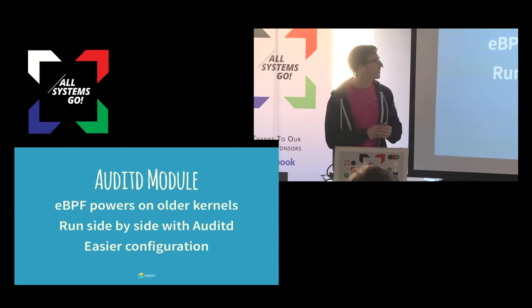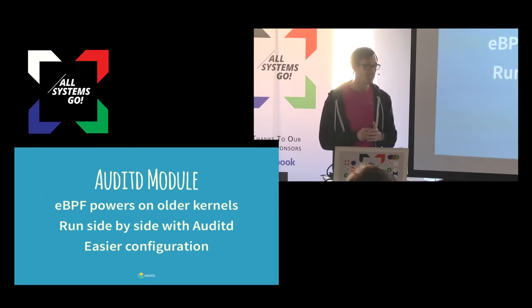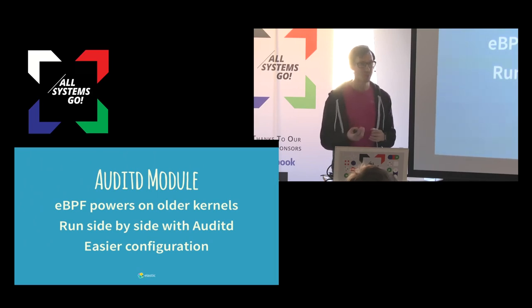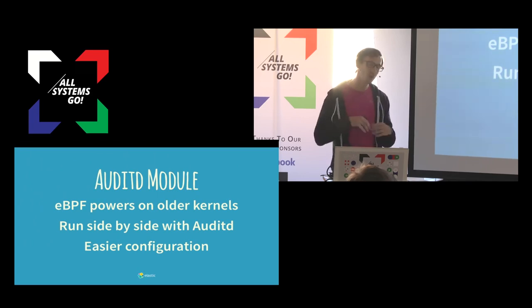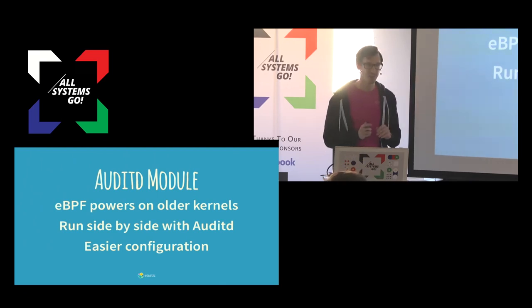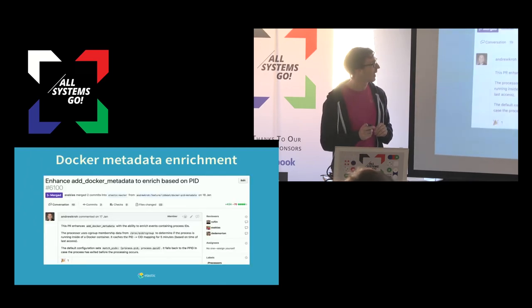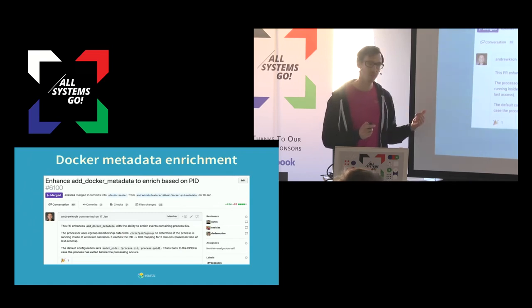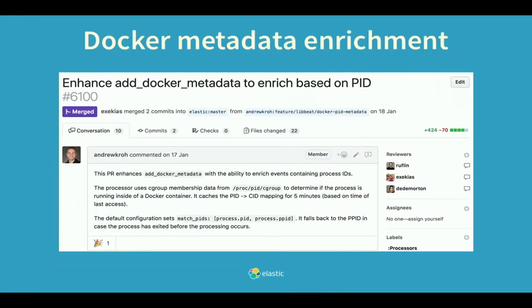The idea of AuditBeat was: we use the AuditD syntax, so you can reuse the syntax you had for AuditD, but we immediately correlate related events, resolve the user IDs, and push directly to Elasticsearch — so you don't need to write that file and then parse it back with messy regular expressions. Why did we not use eBPF? Because eBPF needs newer kernels, and we have a lot of stuff on, say, CentOS 6 or whatever ancient kernel versions. We also support Docker because we can enrich from the Docker daemon — so we know which container or namespace something is running in.